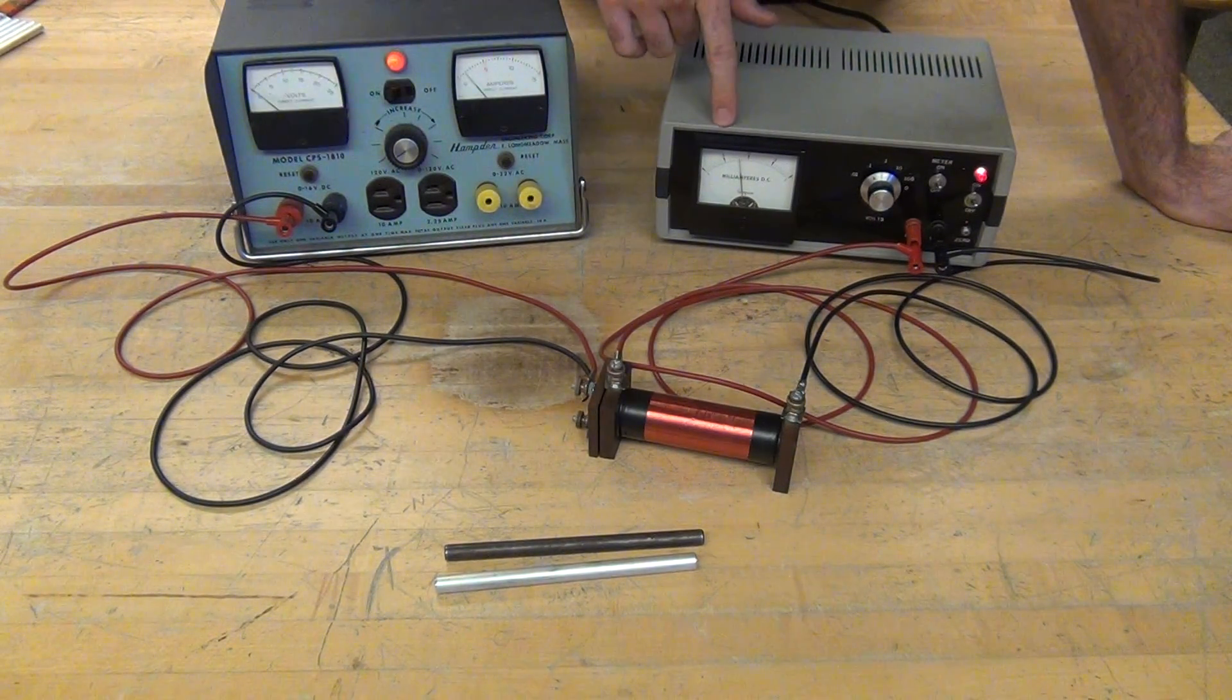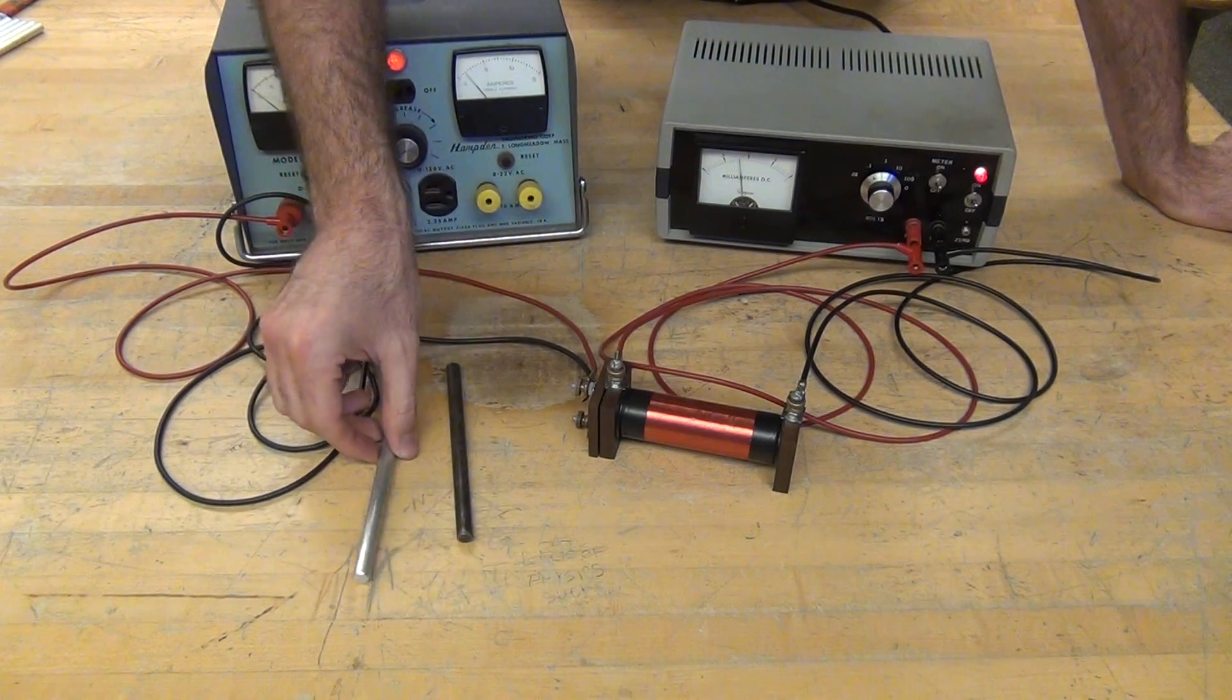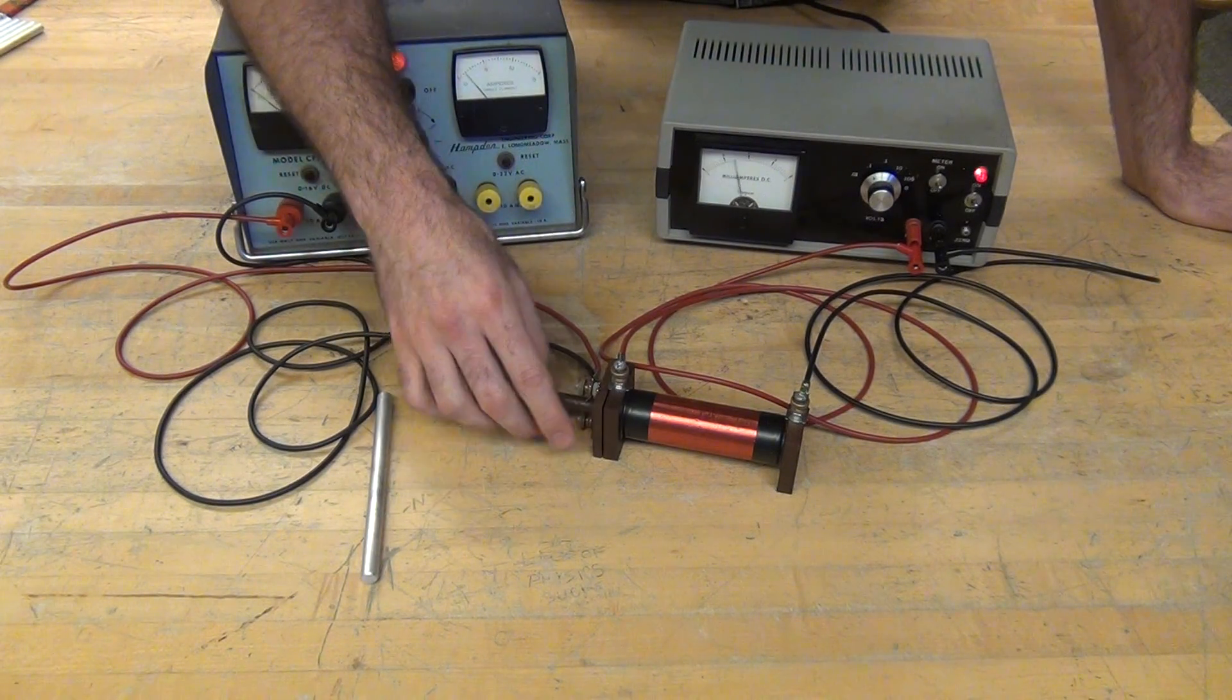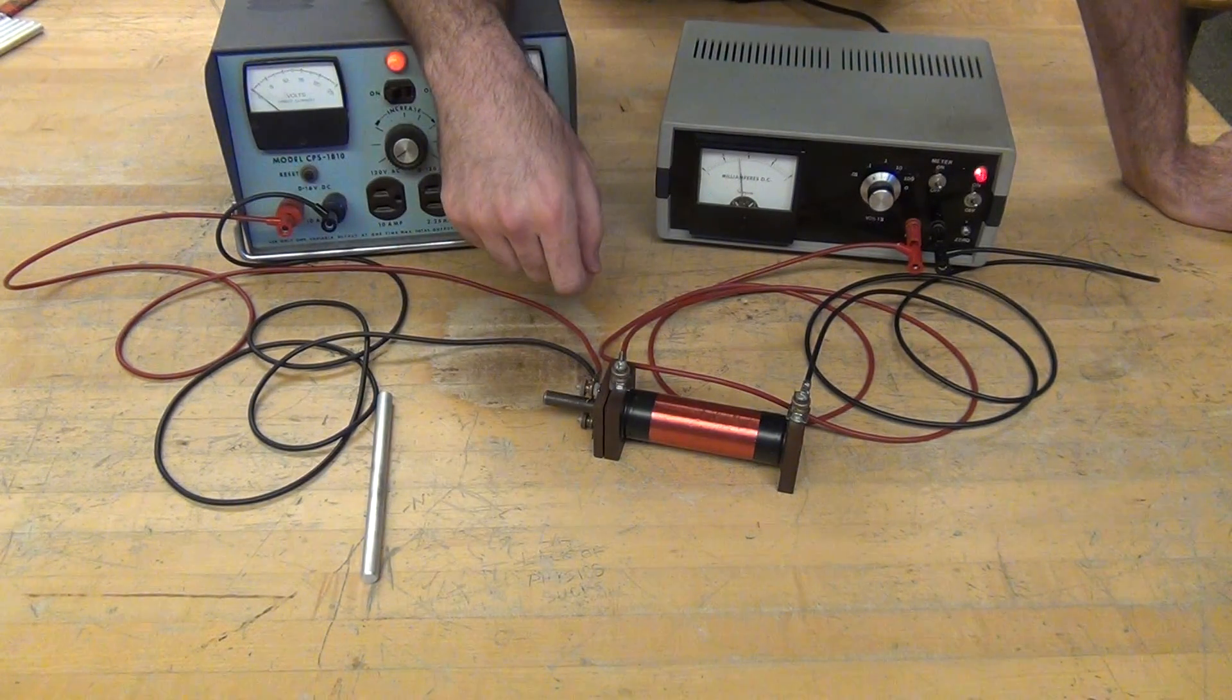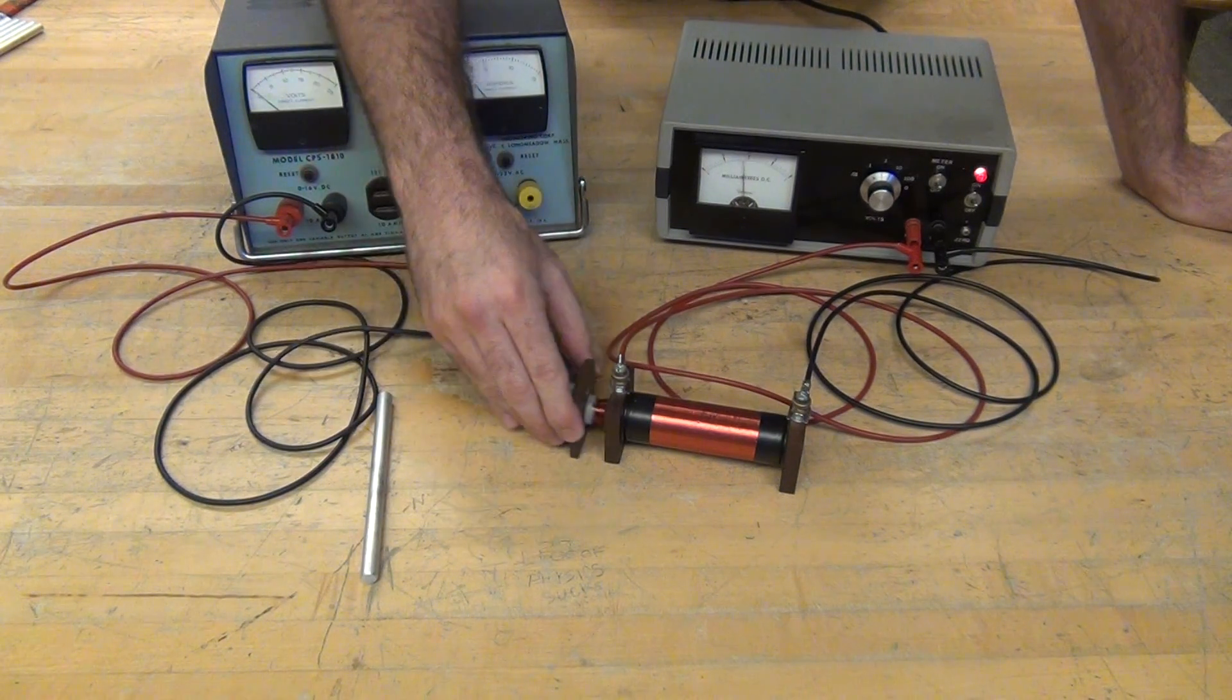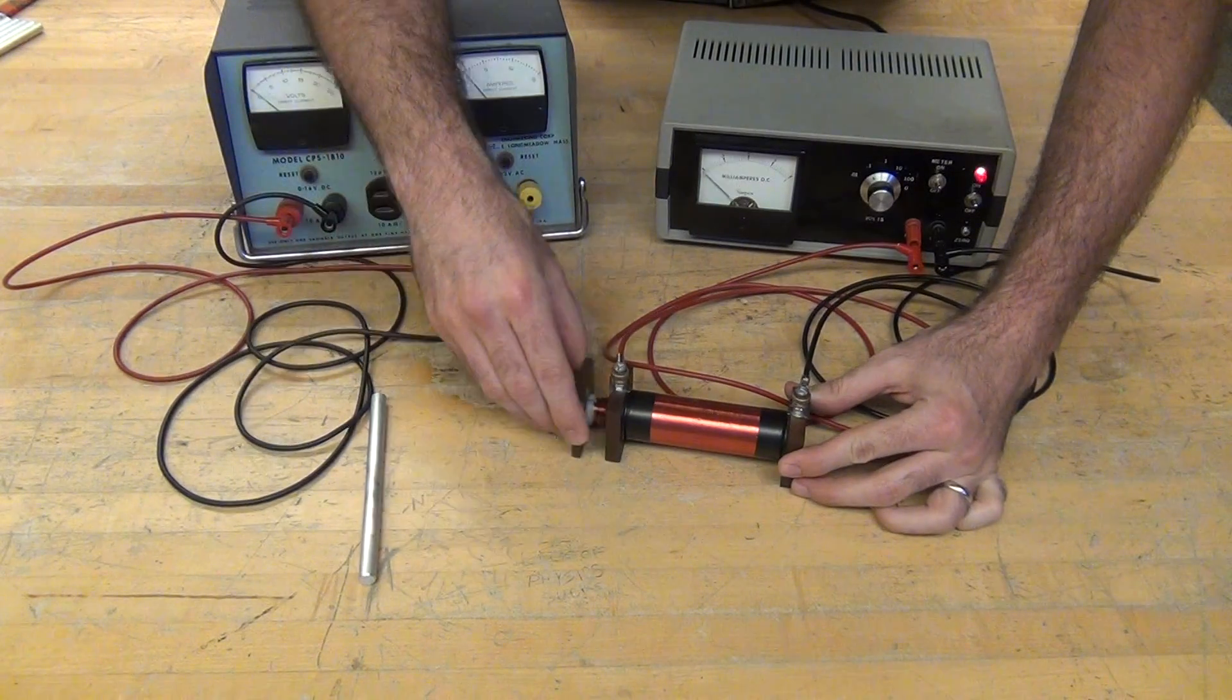And on that finer scale, we have two different rods, one of iron, one of aluminum. Try sliding that rod in, and see what effect that has. Moving it out, or moving the coil with the rod out and in.